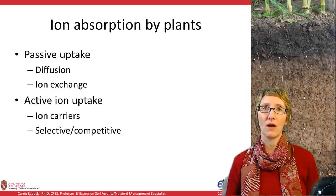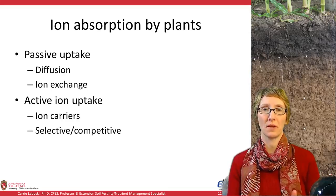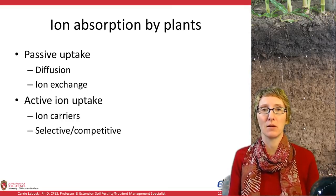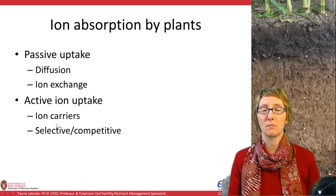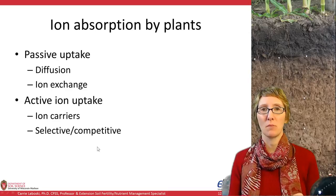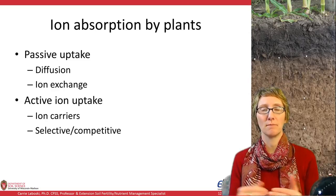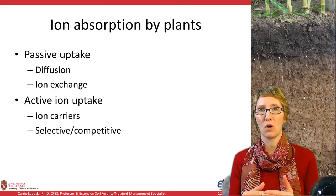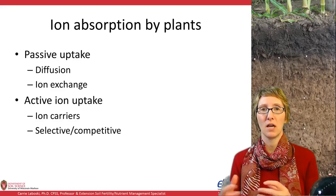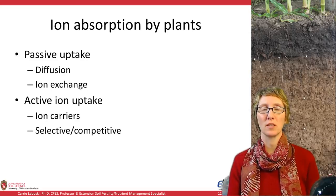Then we have what we call active ion uptake, which is more interesting because it requires the plant to actually do something to get the nutrient — it's not just happening by itself. There are specific ion carriers, which can be selective or competitive, and they are within the cell walls of the root, so not everything is going to penetrate into that root cell wall. The plant has to expend some energy to get those nutrients into the plant.